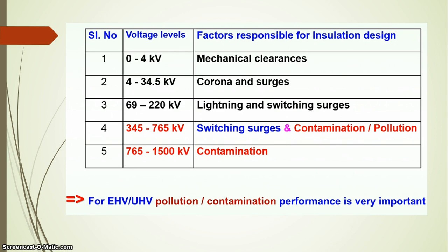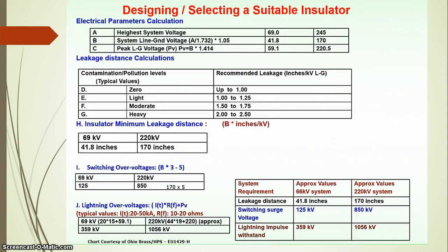From 765 to 1500 kV, contamination is the only factor on which insulator design is based. Above 345 kV is extra high voltage and above 765 kV is ultra high voltage, where pollution and contamination performance is very important.